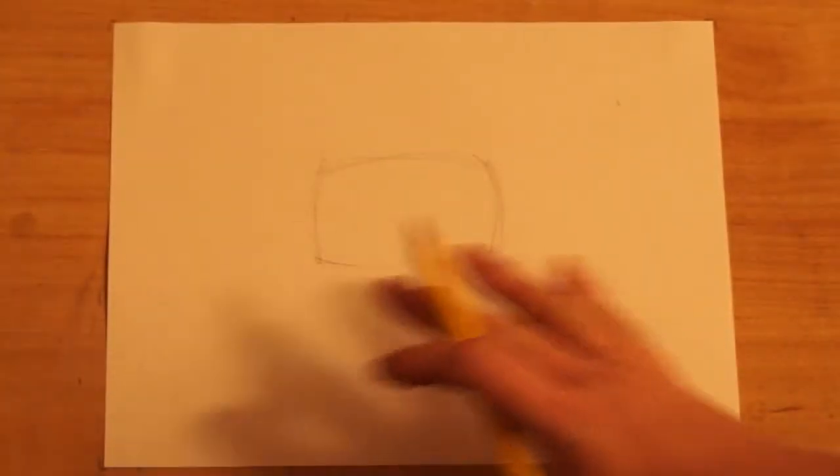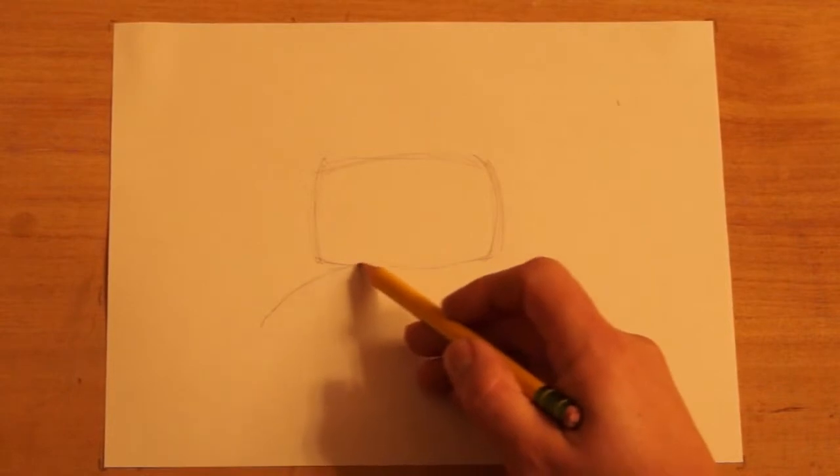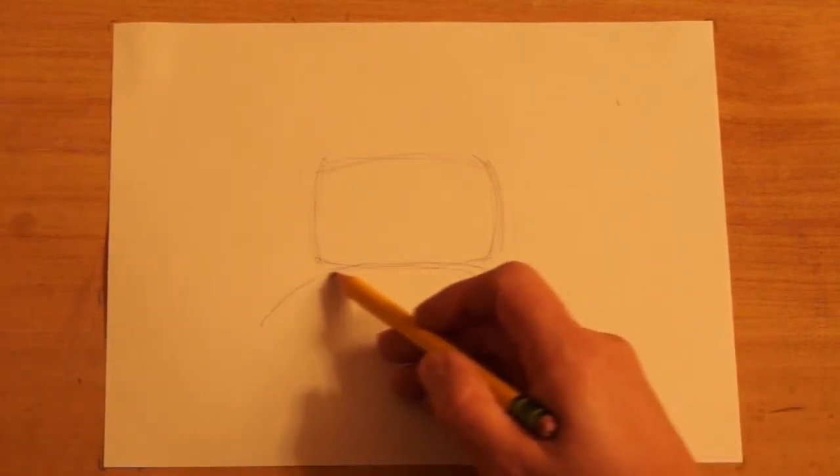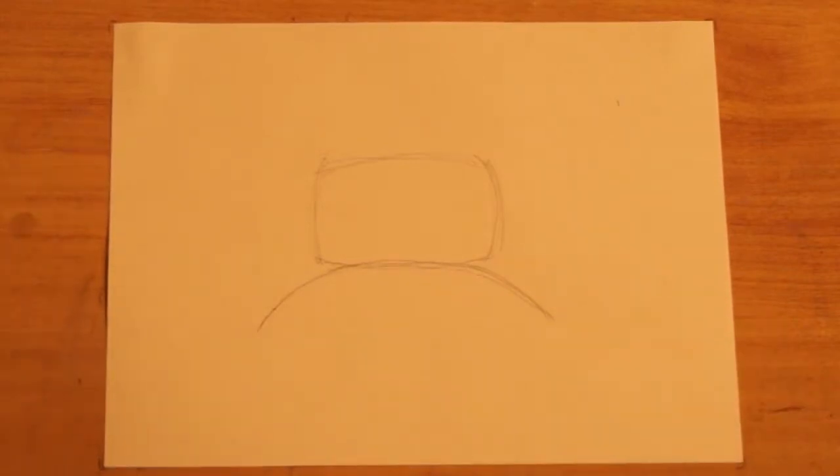Now, the horse is running. So to show that I'm going to make a line that curves across the bottom, kind of like a rainbow. It's a big, long curve.